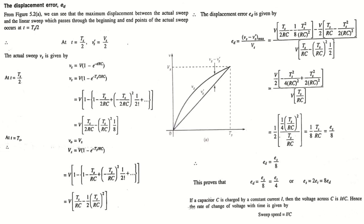The displacement error is defined as the maximum difference between the actual sweep signal and the ideal sweep signal (VS − VS'), divided by the amplitude of the sweep signal at t = TS, which is VS. The maximum difference between these two signals occurs exactly at the center of the two sweep signals — at t = TS/2.